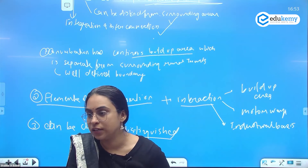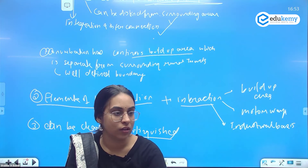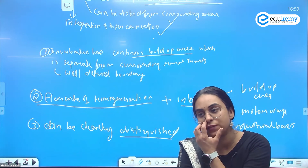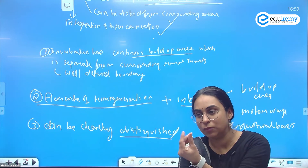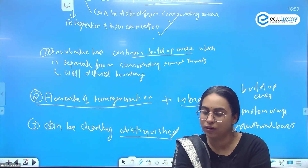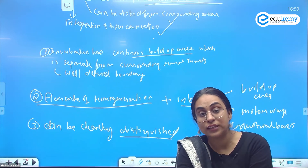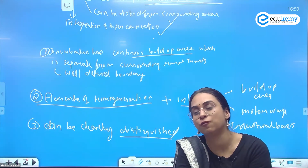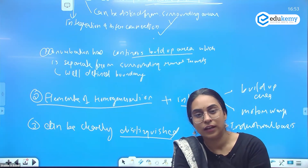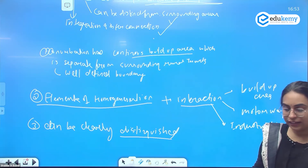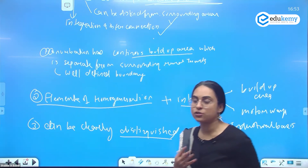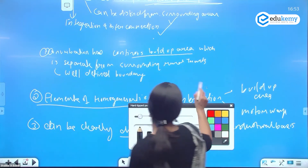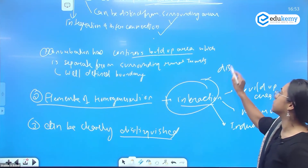You can use examples from across the world since the question is not specifically asking about India. In the diagram you can show these elements. You can also say that conurbation has its own distinct sense of place, and when we mention interaction, you can also mention its own distinct sense of place.